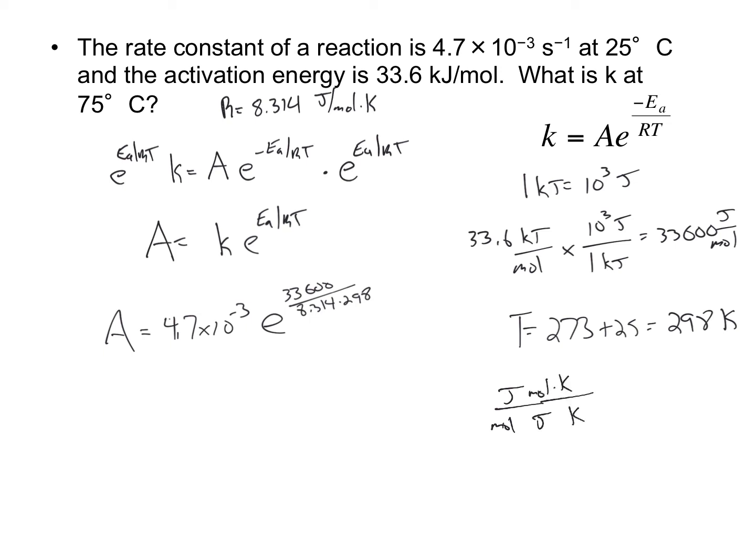So the joules cancel, the moles cancel, the Kelvins cancel, and it should always be the case, the units in the argument of my exponent cancel out. And then the other units we have to worry about, A and the rate constant will always have the same units. So since my units on my rate constant are seconds to the minus one, the units on the frequency factor should also be seconds to the minus one.